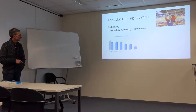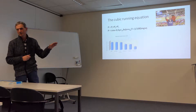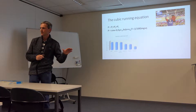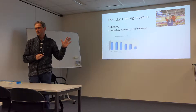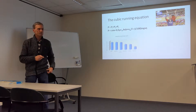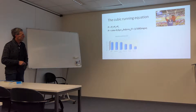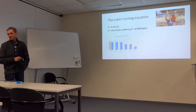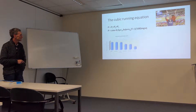We know that Bolt ran 9.58 in Berlin, and we know that he did that at 20 degrees Celsius, with a tailwind of one meter per second and 1013 millibars of pressure. So we can ask: what would happen if it were 25 degrees Celsius — five degrees hotter — so the air density would be a little bit less?